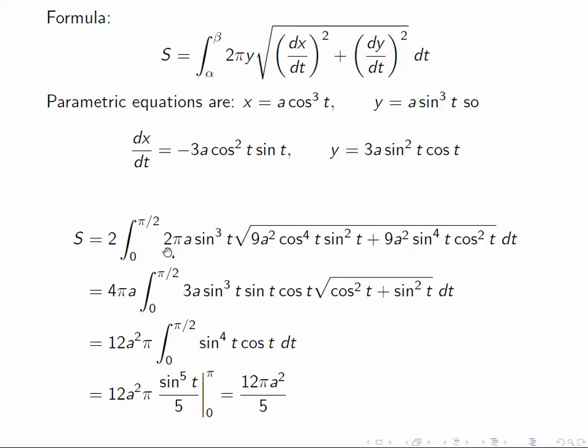This is the surface area of one half of that solid. So we have two pi times y, a sine cube t, times the square root of the squares of these derivatives, which gives us that.